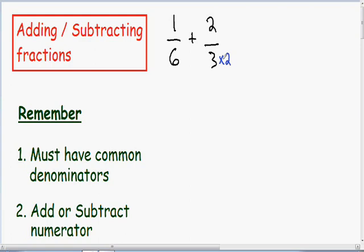Whatever you do to the bottom of a fraction, you have to do to the top of a fraction. So since we multiply the bottom of this fraction by 2, we've got to multiply the top of this fraction by 2 as well. So in our numerator we have 2 times 2, which gives us 4, and in our denominator we have 3 times 2, which gives us 6.